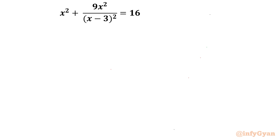Let us get started by writing the domain of the equation. As you can see, x minus 3 is in the denominator, so we can write x minus 3 cannot be equal to 0. From here we conclude x cannot be equal to 3.